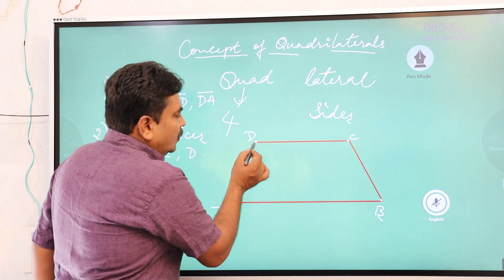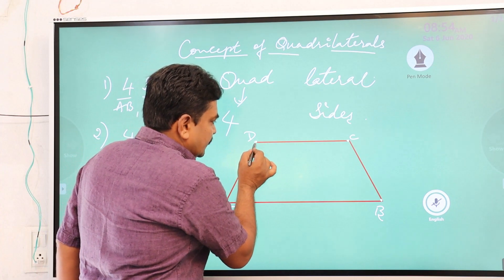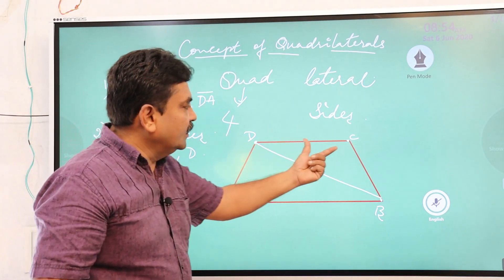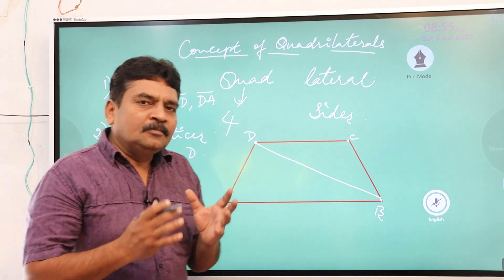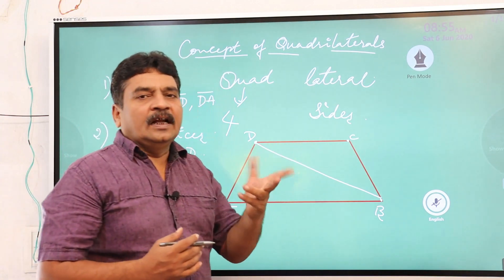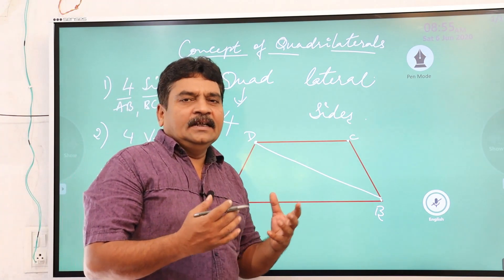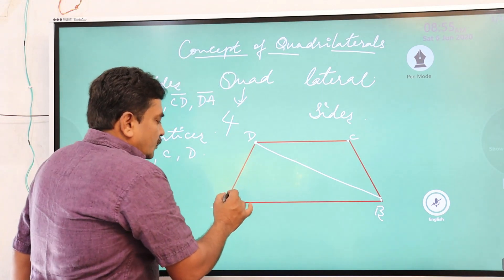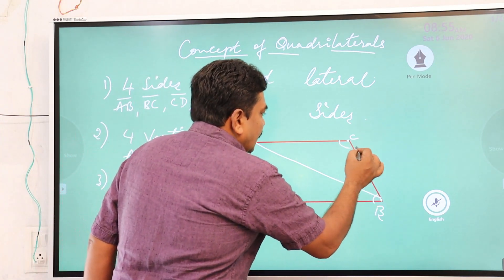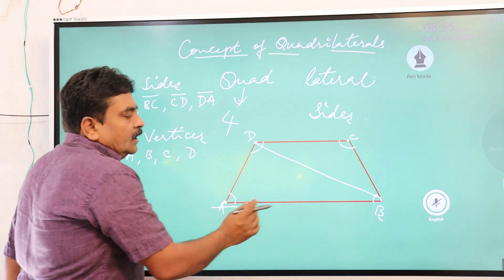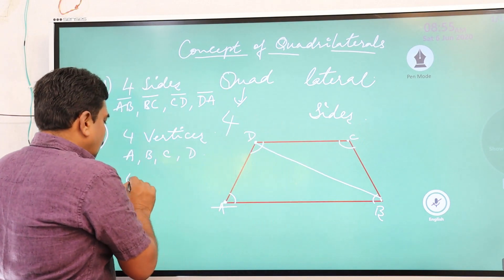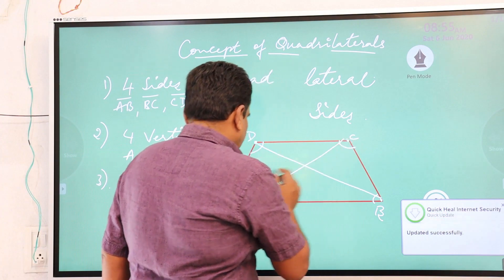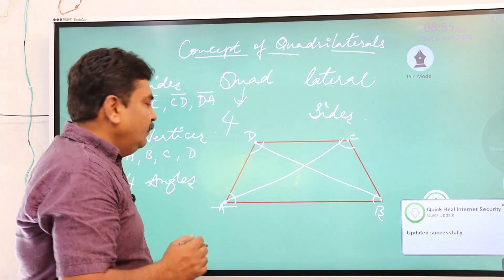If I draw a line from one vertex passing through to the opposite vertex, the quadrilateral is divided into two triangles. Each triangle has an angle sum of 180 degrees, so two triangles give us 360 degrees. This means the sum of the four angles of a quadrilateral is 360 degrees. The four angles are angle A, angle B, angle C, and angle D. A quadrilateral also has two diagonals.